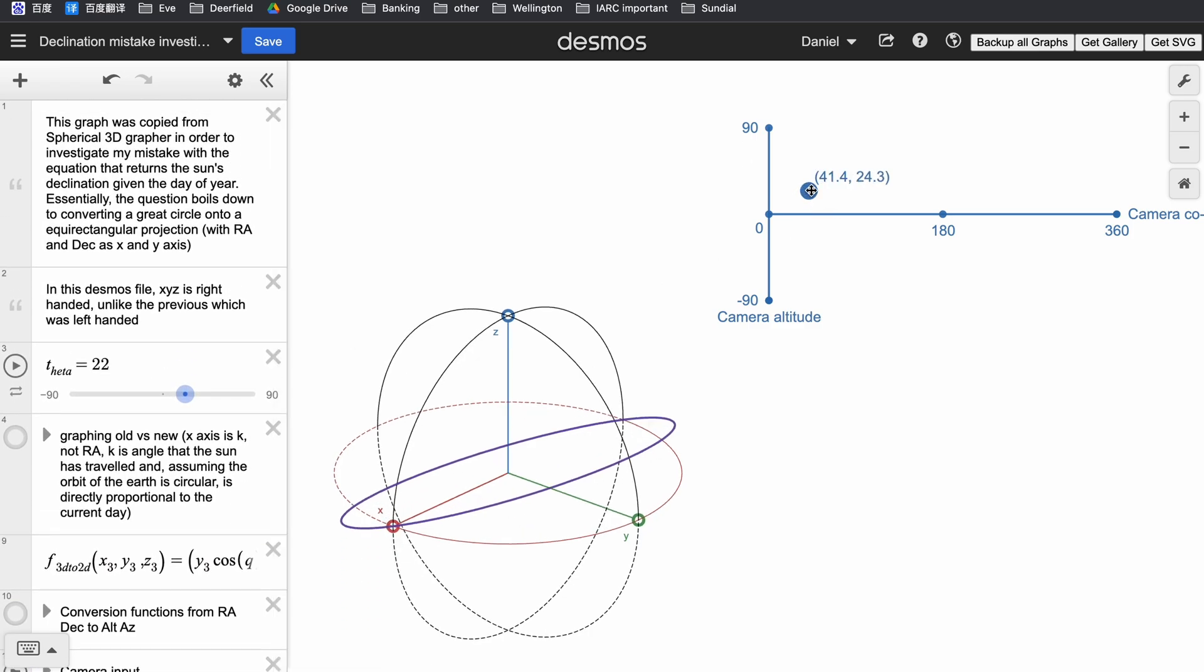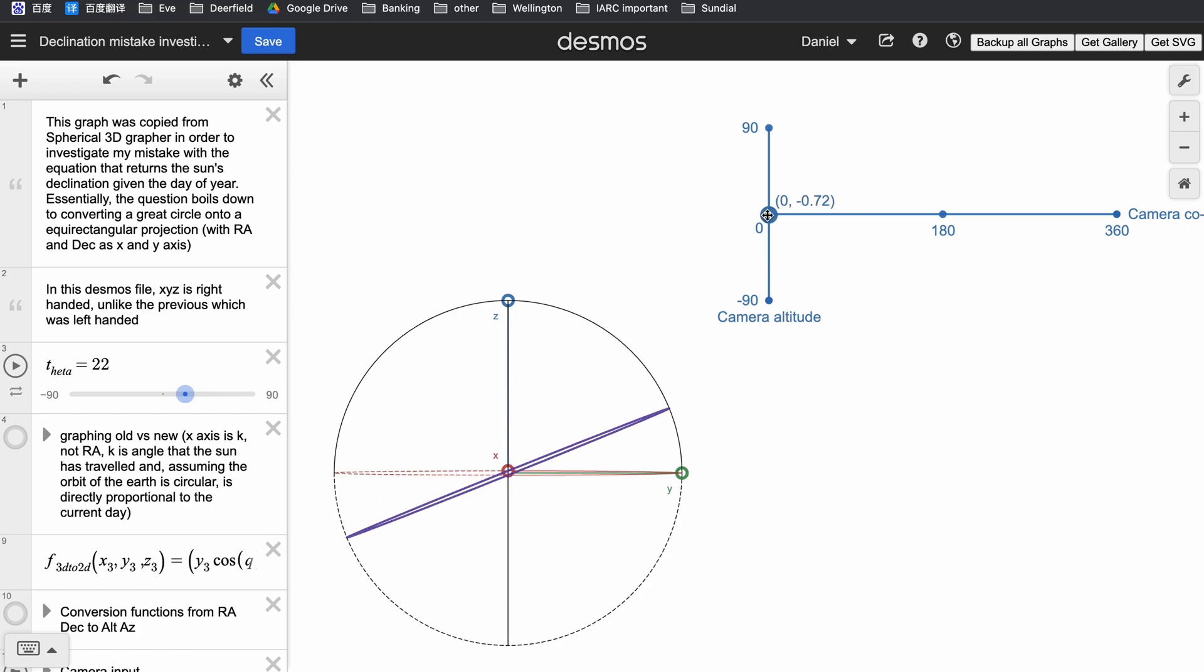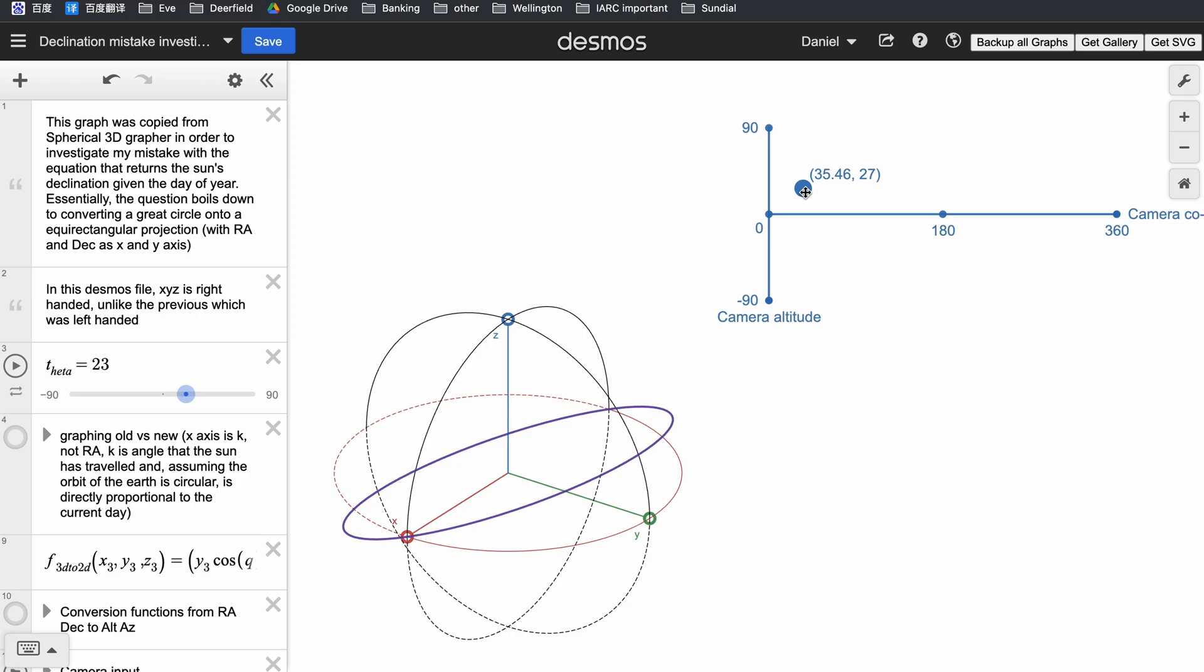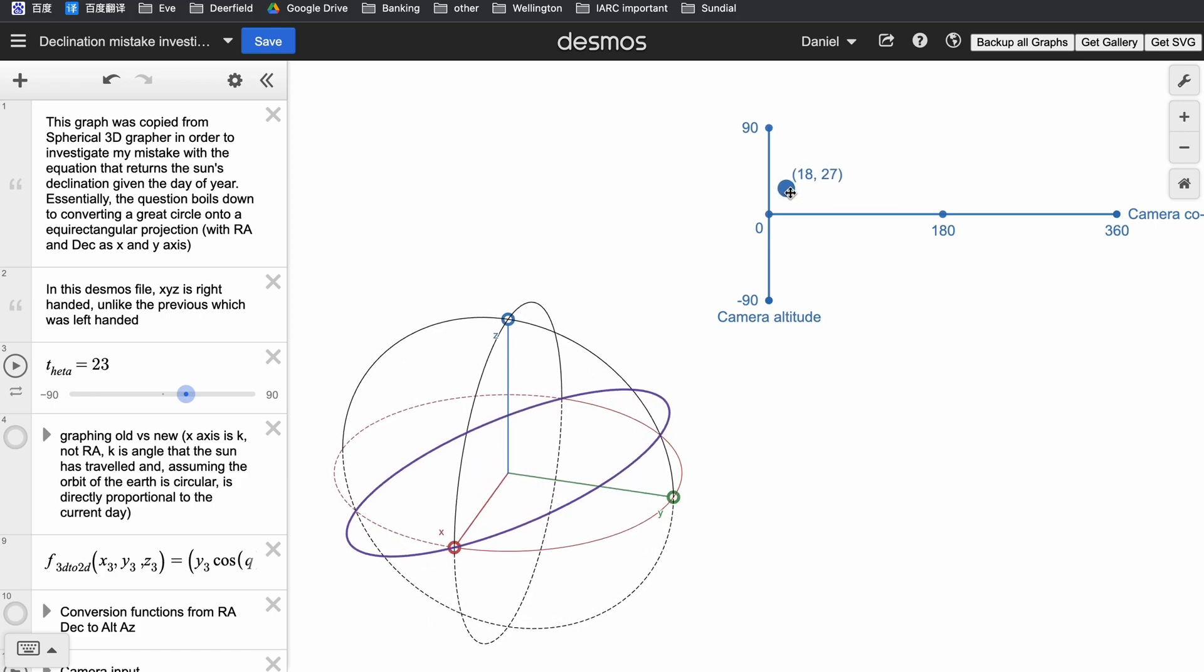Because the orbit of the earth is tilted compared to the earth's rotation, if you look at the situation from the side, the path of the sun in the sky appears to tilt by 23 degrees, which is exactly the tilt between the earth's rotation and its orbit.